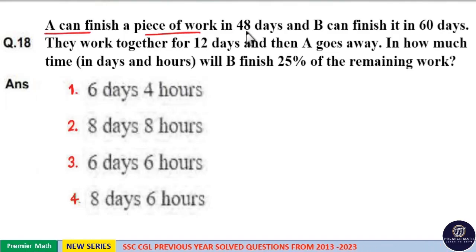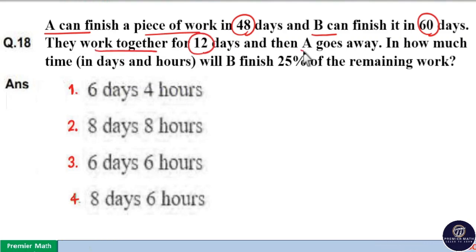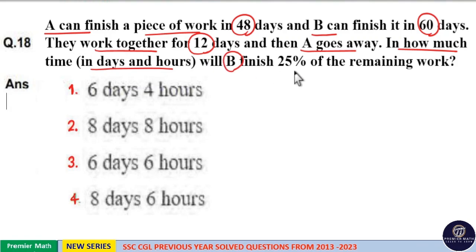A can finish a piece of work in 48 days and B can finish it in 60 days. They work together for 12 days and then A goes away. In how much time, in days and hours, will B finish 25% of the remaining work?